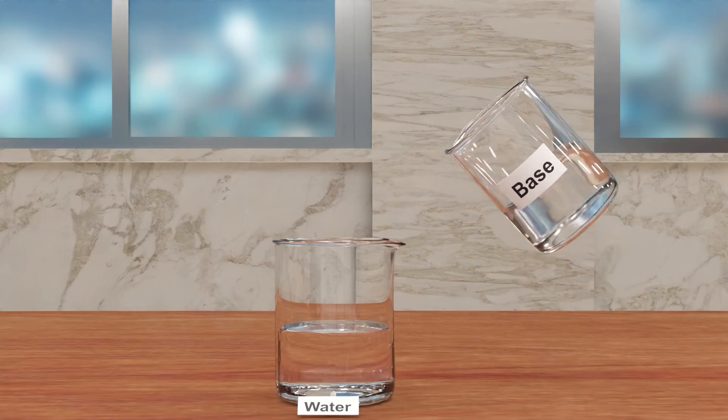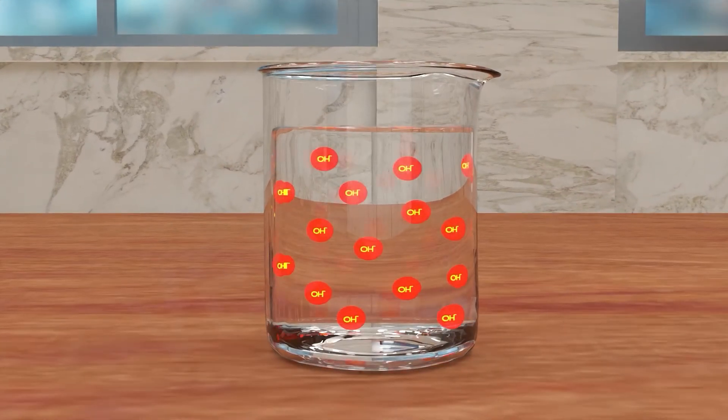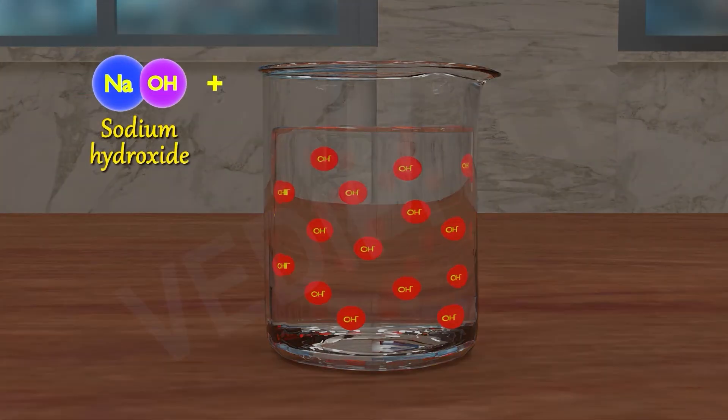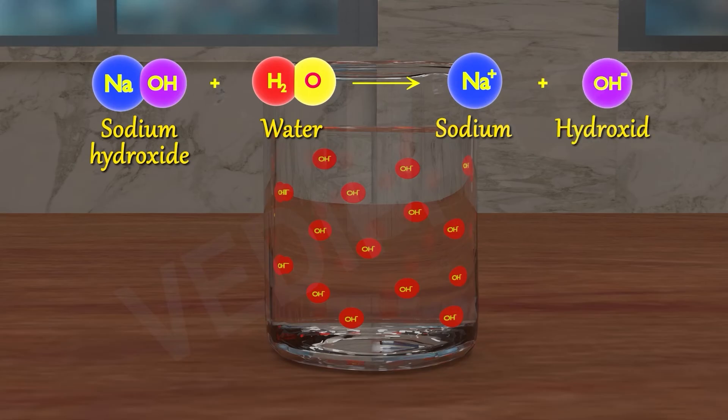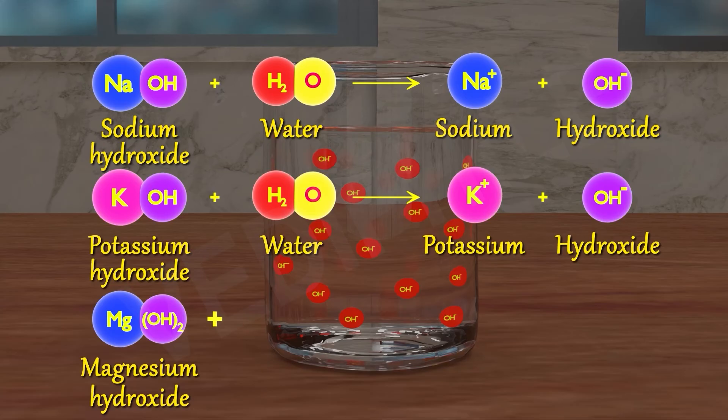Now let's see what happens when a base is dissolved in water. NaOH reacts with water and produces Na plus and OH minus ions. Likewise, KOH produces K plus ions and OH minus ions.